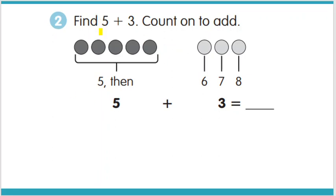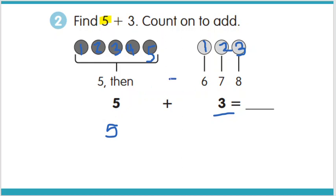The first step is to take that bigger number. Here we have find 5 plus 3, and we're going to count on to add. So I'm going to start with the bigger number, which is 5 — I put 5 in my mind. I have 1, 2, 3, 4, 5. Now I'm going to count on 3 more: 6, 7, 8. So the answer is 8.